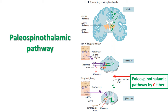The paleospinothalamic tract also starts from the receptor free nerve ending, and from there the C fiber — the first order neuron that carries the slow pain sensation — reaches the posterior horn of the spinal cord. The cell body of this first order neuron is located in the dorsal root ganglion, and like the neospinothalamic tract, it may go up and down a few segments and then ends in Rexed lamina 1 and 2.